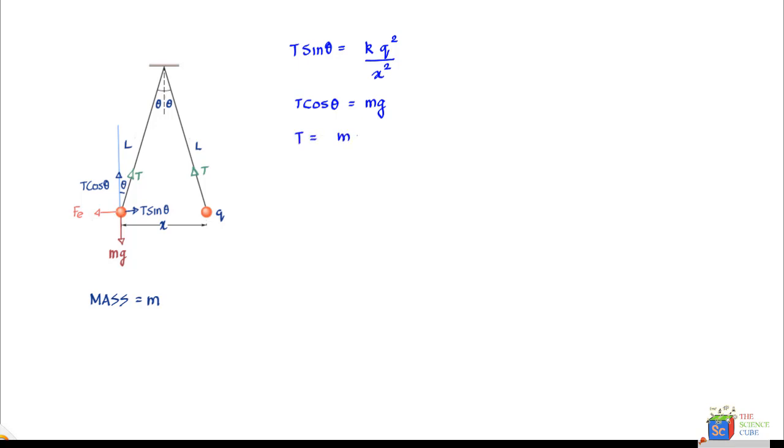If you go ahead and substitute the value of T in the first equation, what we get is mg upon cos theta multiplied by sine theta equals k q square upon x square.